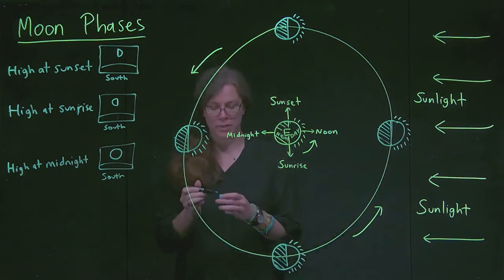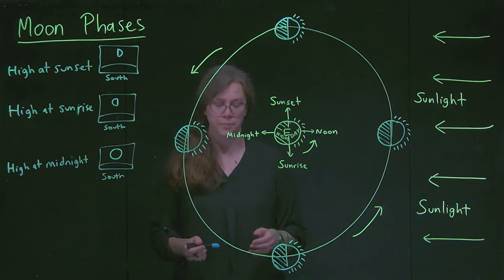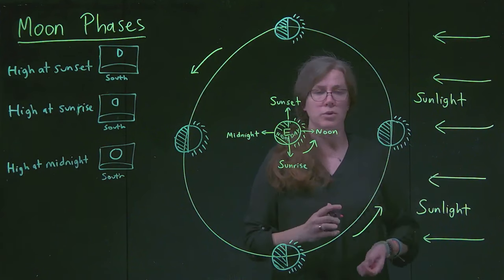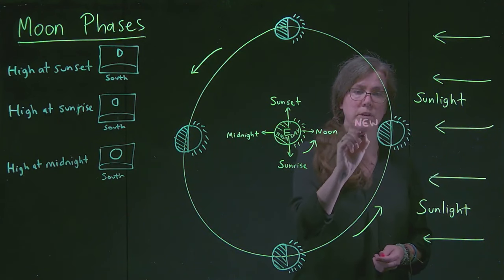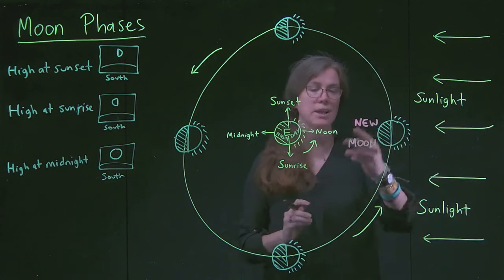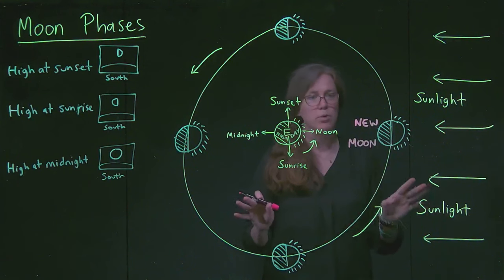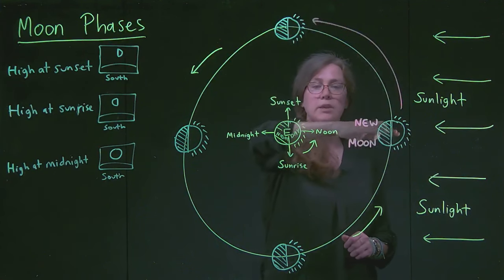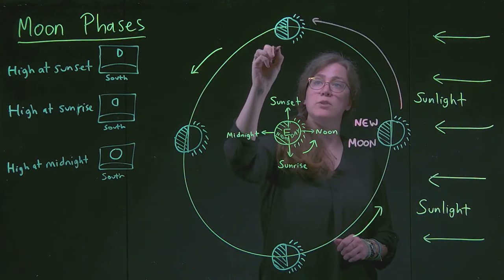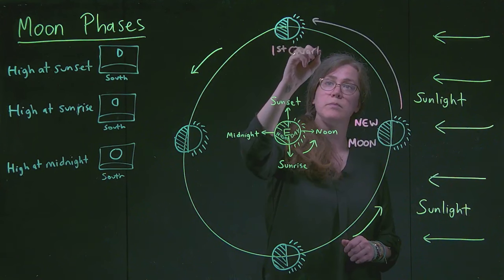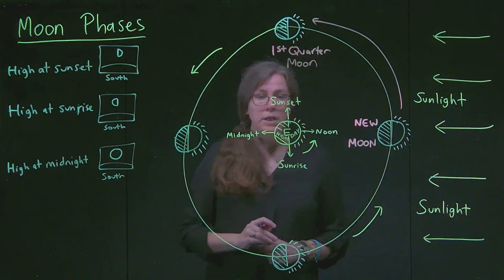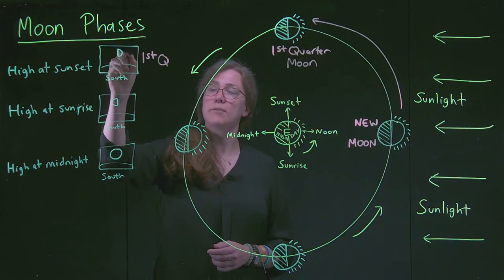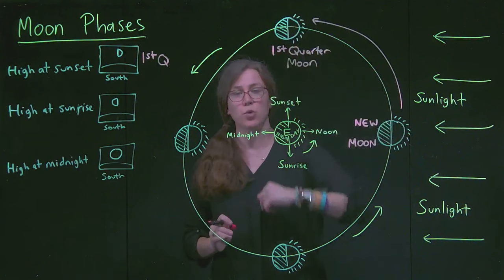We want to start giving these Moon positions names. This is the start of what we call the cycle of the Moon's phases, and this is the new Moon. It's new because it's the start of the cycle — it's empty from our point of view, we don't see any of the lit-up side. To get from the new Moon to the next position is a quarter of the cycle, which means that this is the first quarter Moon — not because it is a quarter lit up, but because it is a quarter of the way around the orbit.